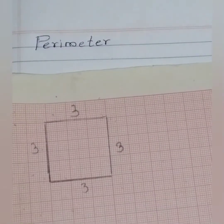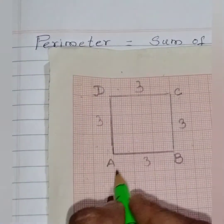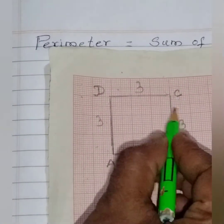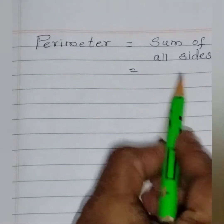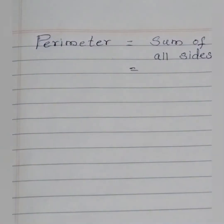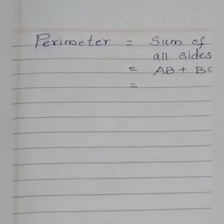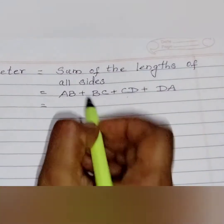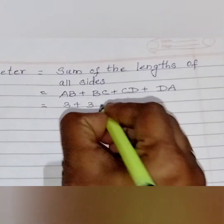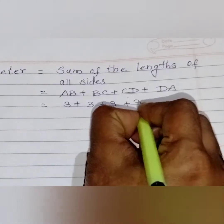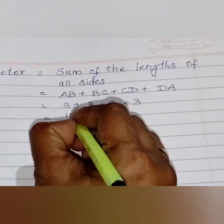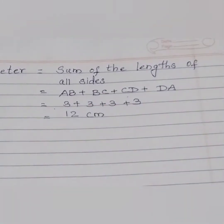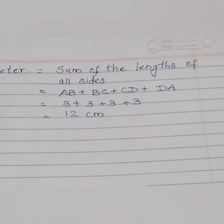Each side of the square is 3 cm. Now, what is perimeter? It is the sum of the lengths — that is AB plus BC plus CD plus DA. So, 3 plus 3 plus 3 plus 3. When we add, we get 12 cm. So, the perimeter here is 12 cm.